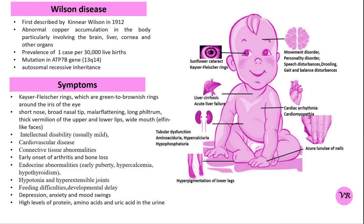Wilson disease was first reported by Dr. Samuel Alexander Wilson, a British neurologist, in 1912. Dr. Wilson described the disease as a rare genetic disorder characterized by copper accumulation in the liver, brain and other tissues, leading to a range of neurological and hepatic symptoms. His detailed observations and clinical descriptions of the disease were foundational in recognizing and understanding Wilson disease.